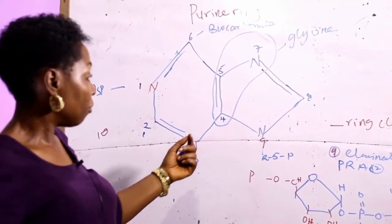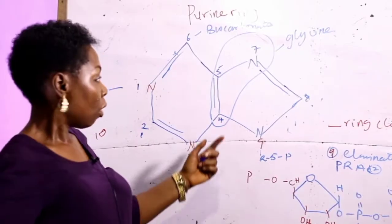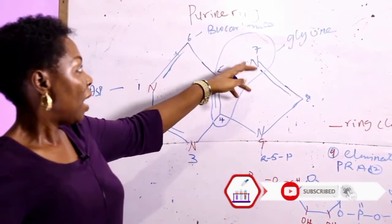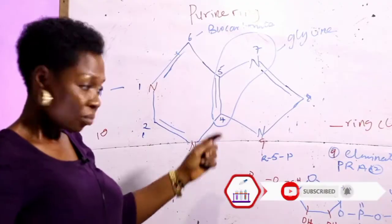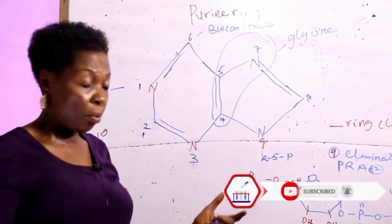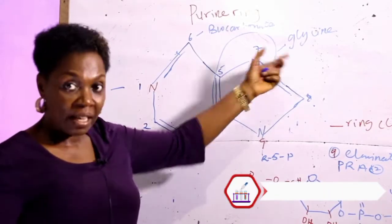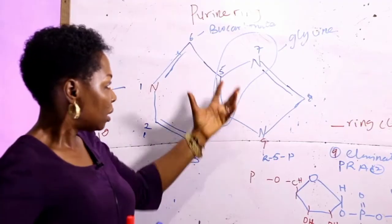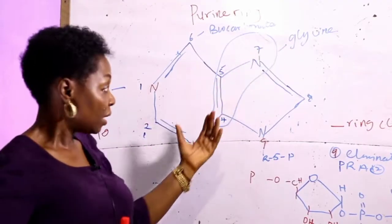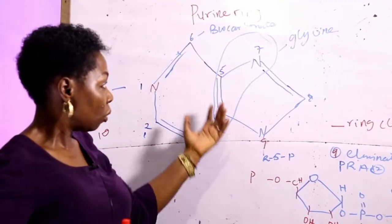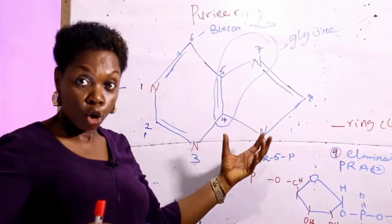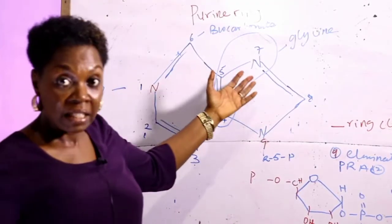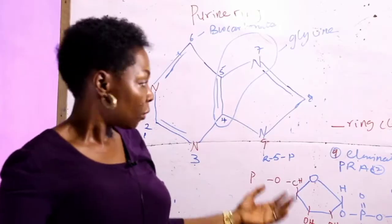After the formation of phosphoribosylamide, you now have the acquisition of carbons 4 and 5 and nitrogen 7 — building up of the ring — from glycine. Once glycine supplies this molecule, it is added to the growing ring and you have glycinamide ribotide.